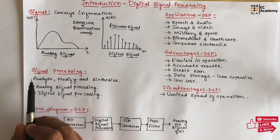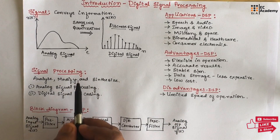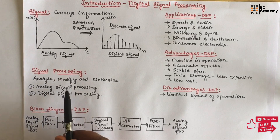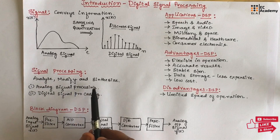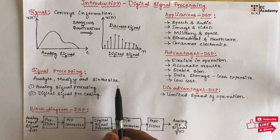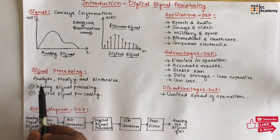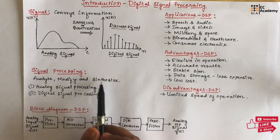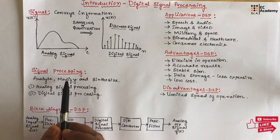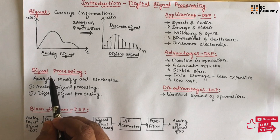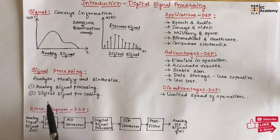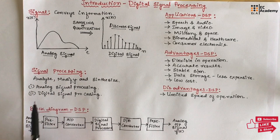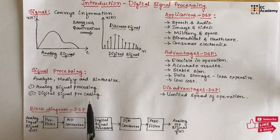Now let us understand what is signal processing. Signal processing is performed to analyze, modify, and synthesize the signal. Signal processing can be classified into two types: the first one is analog signal processing, and the second one is digital signal processing.